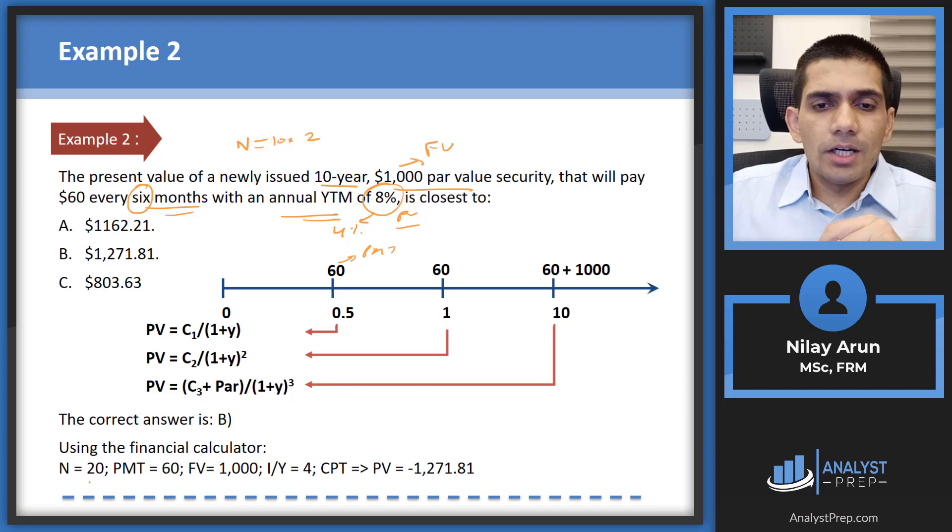So using the financial calculator N is 20. PMT that's the coupon which you're getting. That's 60. Future value is 1000. IYY which is interest or yield. That is 4. All that you need to do is compute and PV. So just put it into your BA 2 plus calculator and you'll be able to get the answer as minus 1271.